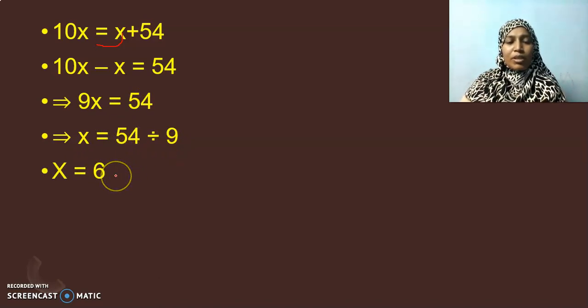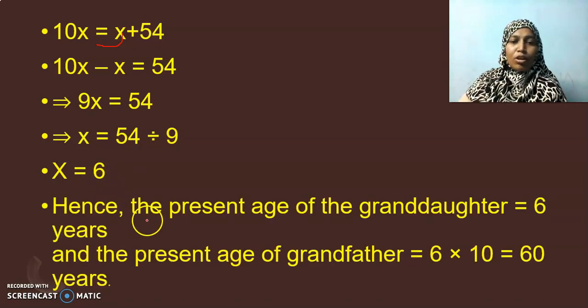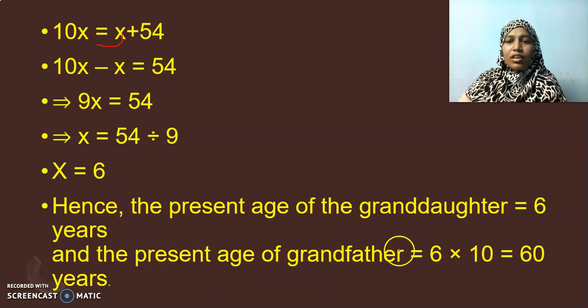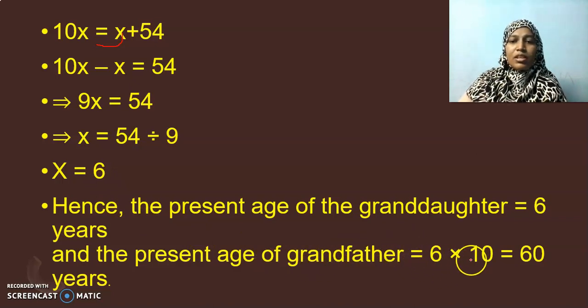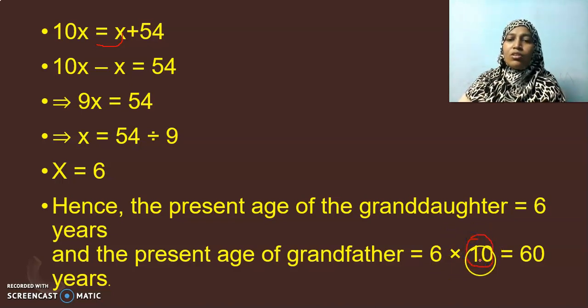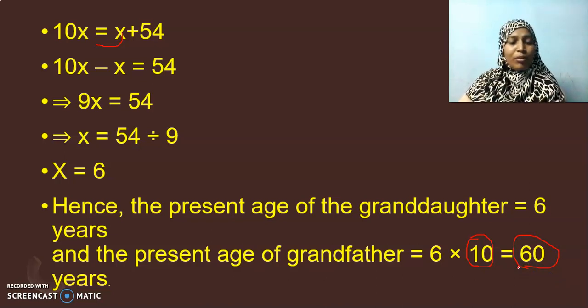So what is the present age of granddaughter? Yes, that girl, small girl. She is just 6 years old. And what about that grandfather's age? He is 10 times granddaughter's age. So 10 into 6, 10 times 6 are 60 years old. I believe even your grandfathers will be more than 65 or 70. Nearly, they will be around 70 or 60. Maybe, maybe.